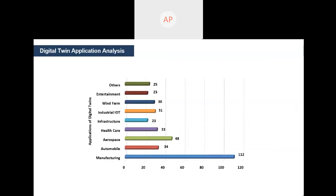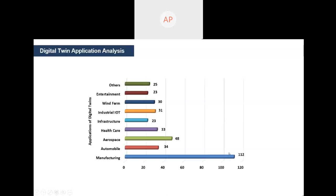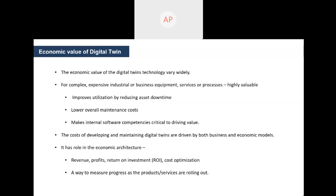This is a digital twin application analysis of the various domains wherein digital twin is currently being applied. We can see that the manufacturing industry is dominating among them at a greater rate. This graph shows that digital twin is being accepted and used in a greater manner.